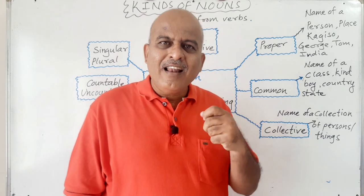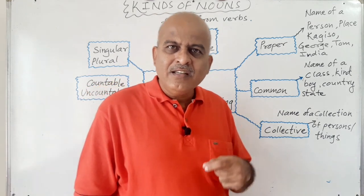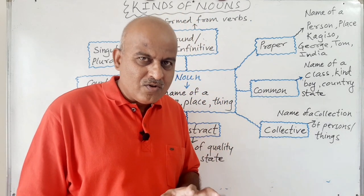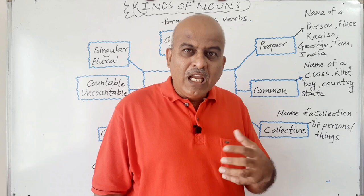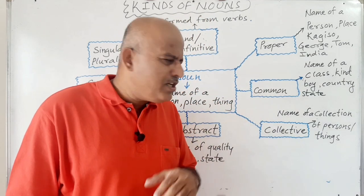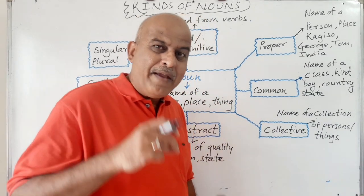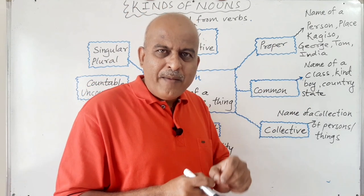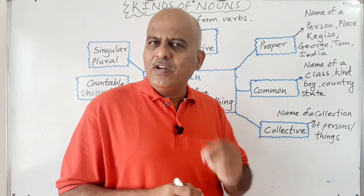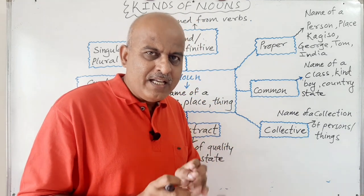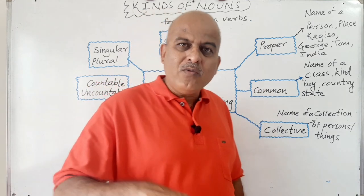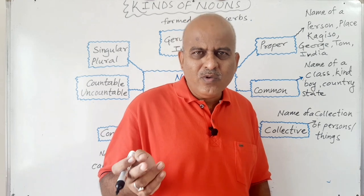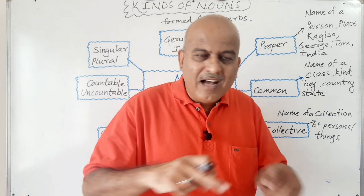For example, tiger, lion, elephant, deer — all these are common nouns. Mountain, hill — all these are common nouns. Furniture is a common noun. If we say Himalaya, that is a proper noun because that is the particular, specific name given to a certain thing or place. But if we say 'mountain,' it is a common noun because there are hundreds of mountains in the world and mountain refers to the class.